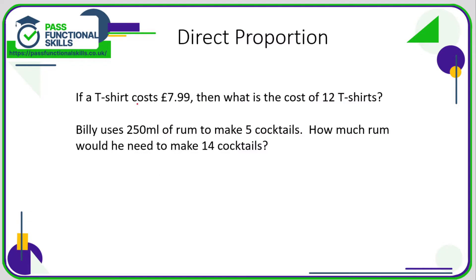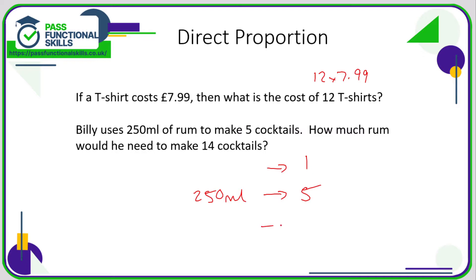Direct proportion is quite straightforward: if a t-shirt costs £7.99, then 12 t-shirts is simply 12 lots of £7.99. As you increase the number of t-shirts, you increase the cost at a rate of £7.99 per t-shirt. In this next example, Billy uses 250 millilitres of rum for 5 cocktails, and we need to work out the amount for 14 cocktails. Since 5 doesn't go into 14 very easily, let's find the amount for one cocktail.